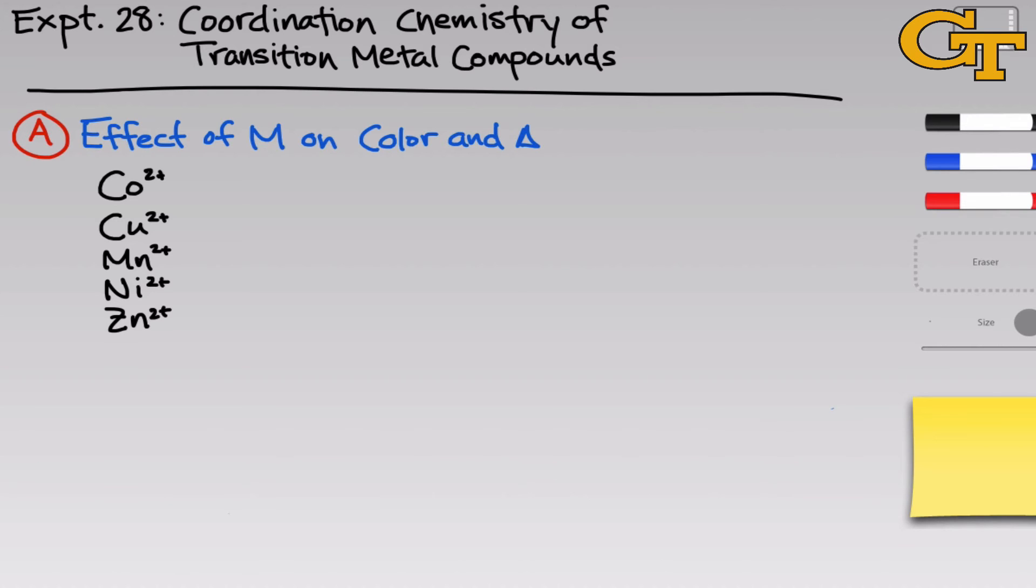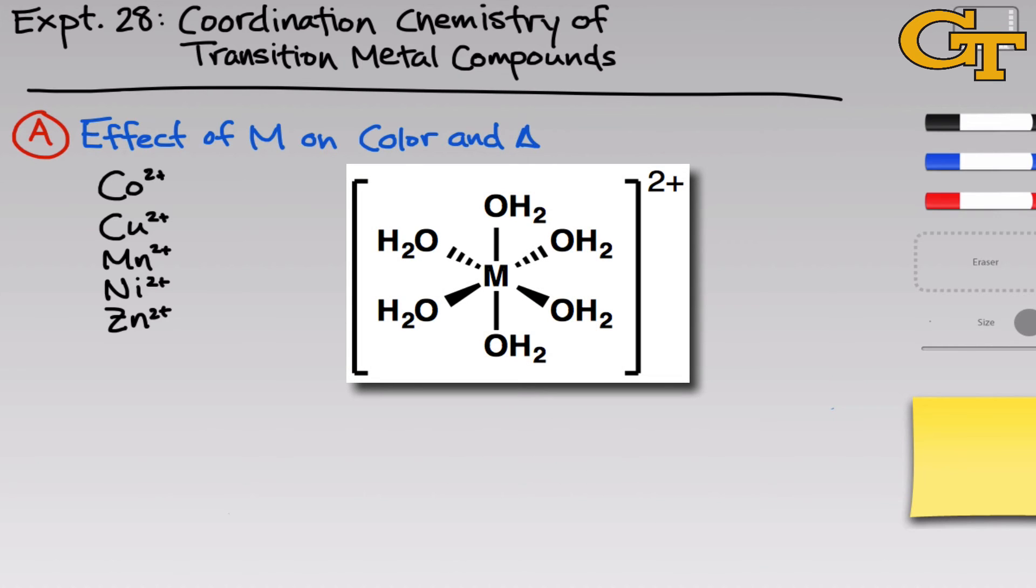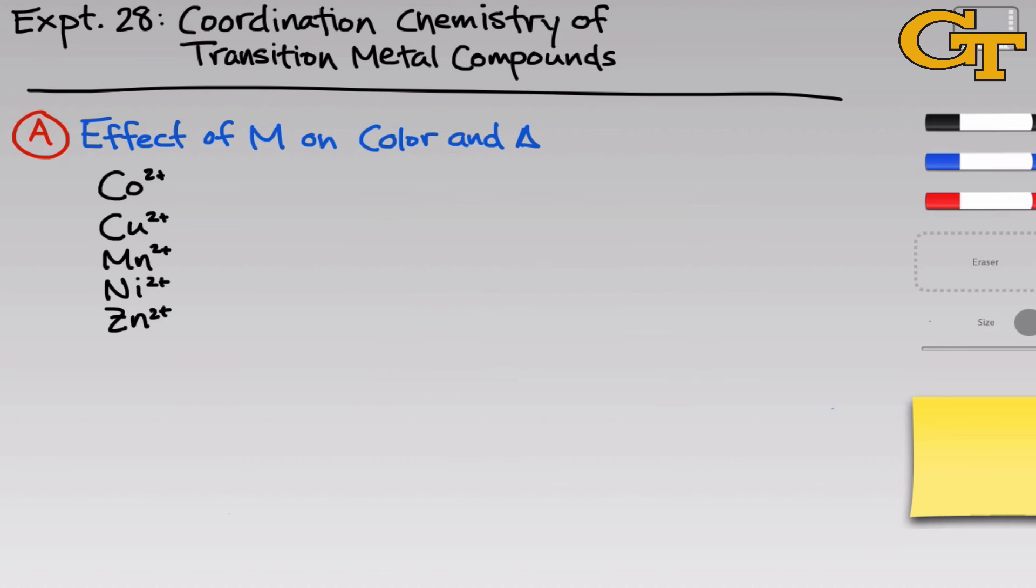Cobalt 2+, copper 2+, manganese 2+, nickel 2+, and zinc 2+. And we'll be working with aqueous solutions throughout this part of the experiment, so all of the complexes will have the form M(H2O)6 2+, so six waters coordinated in an octahedral fashion, so that orbital diagram that we just looked at applies, with an overall charge for the entire complex of 2+. We're going to take these aqueous solutions and perform visible spectroscopy using the LabQuest, meaning we're going to get the absorbance as a function of the wavelength for each of the complexes.